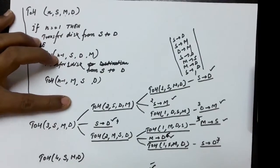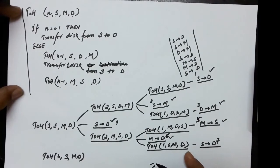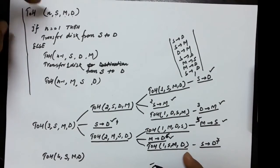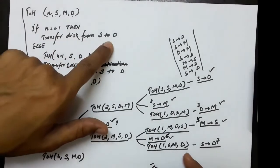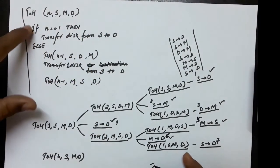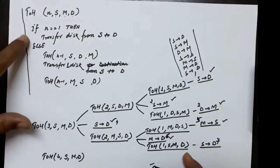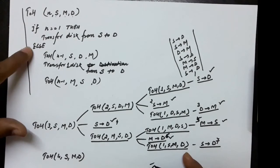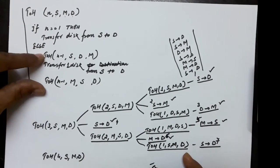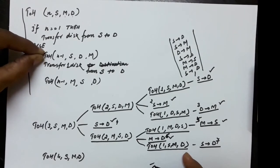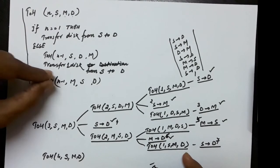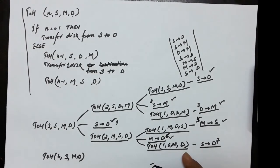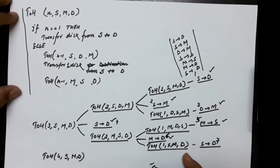Let us look at the Towers of Hanoi function once again to summarize. This is the recursive function with n disks and three towers. If the number of disks is 1, transfer it to the destination directly — this is the base condition. If n is greater than 1, perform three steps: transfer n minus 1 disks from source to mediator, transfer the single disk from source to destination, and then transfer n minus 1 disks from mediator to destination. This is the Towers of Hanoi solution. Thank you.